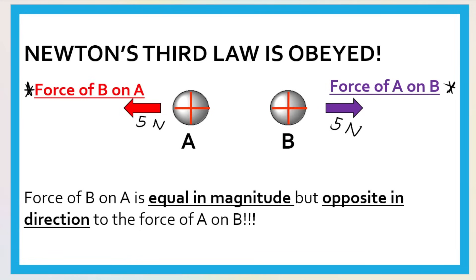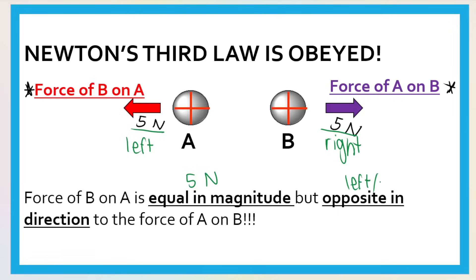Newton's Third Law of motion is always obeyed here. If I have positive sphere A and positive sphere B — like charges repel — A will go to the left and B will go to the right. The forces they exert on each other have the same magnitude but are opposite in direction. So the force of B on A is five newtons to the left, and the force of A on B is five newtons to the right — equal in magnitude, opposite in direction.